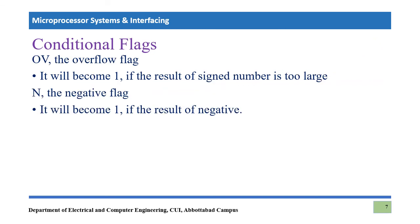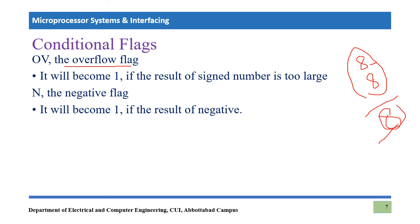The next flags are the OV flag and N flag. OV stands for overflow flag. As the name suggests, it indicates overflow: when two 8-bit numbers are operated on and the signed result cannot be expressed in 8 bits — meaning the register is not large enough to hold the signed number — the OV flag becomes 1. This flag is very important when processing signed numbers.